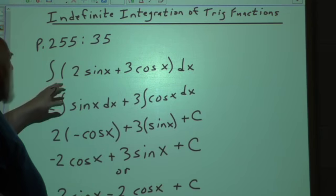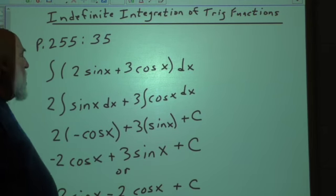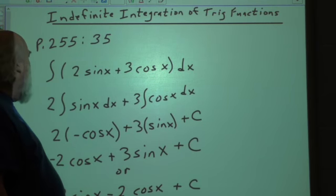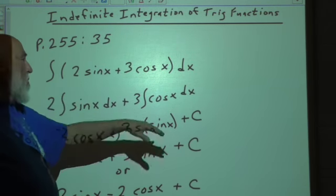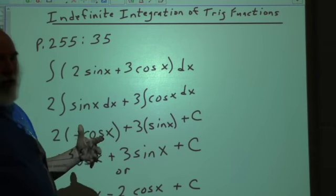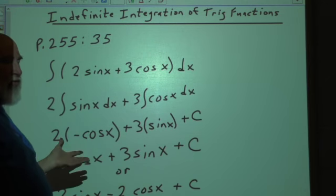All right, so we're back to page 255 and we're looking at some odd number problems. Number 35, this is what we're given in the problem. And that means we can divide this into two sections like we did for the first part of the previous section.